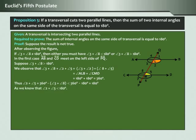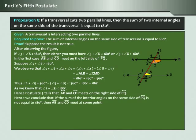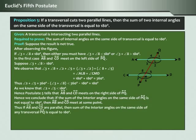As we know that angle two plus angle five is less than 180 degrees, Postulate 5 tells us that AB and CD meet on the right side of PQ. Hence we conclude that if the sum of the interior angles on the same side of PQ is not equal to 180 degrees, then AB and CD meet at some point. Thus if AB and CD are parallel, then the sum of the interior angles on the same side of any transversal PQ is equal to 180 degrees.